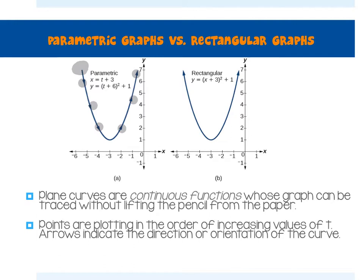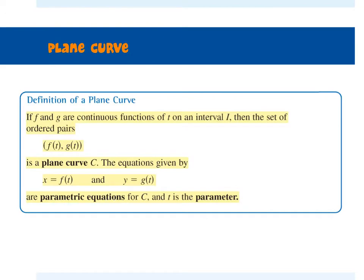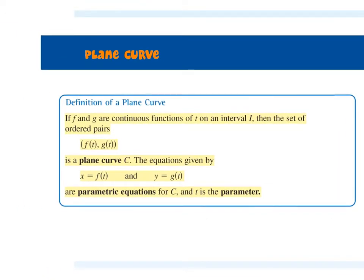Arrows indicate the direction or orientation of the curve. So if this is where T is 0, then this could be where T is 1, 2, 3, 4, 5 — as we increase T, that's the direction the arrows point. This is how it's written in function notation. The definition of a plane curve: continuous functions on an interval I, where the set of ordered pairs is F(T) and G(T). F(T) is the X value, G(T) is the Y value. We plug in values for T into each separate equation, get X and Y values, combine them into coordinates, and put arrows on the graph pointing toward the later T's.